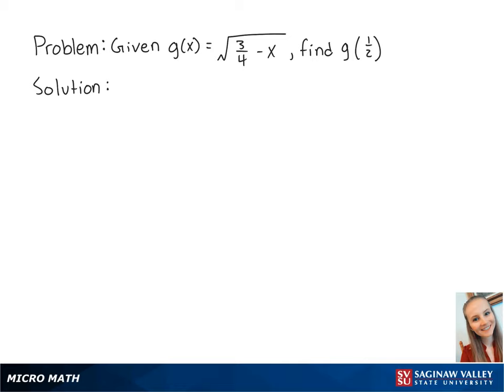For this problem, we want to find g of 1 half when g of x is equal to the square root of 3 fourths minus x. To find g of 1 half, we need to plug in 1 half for x.